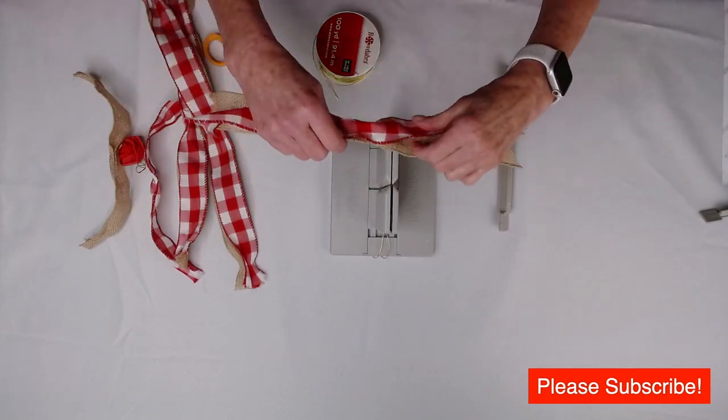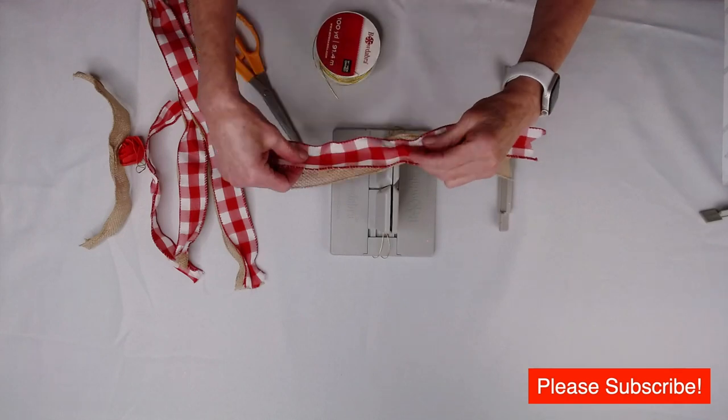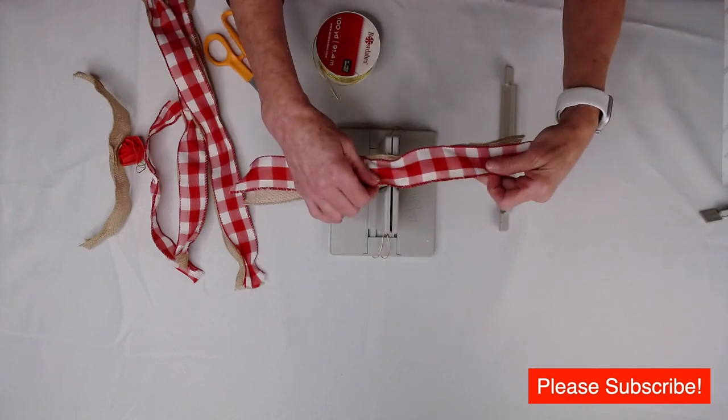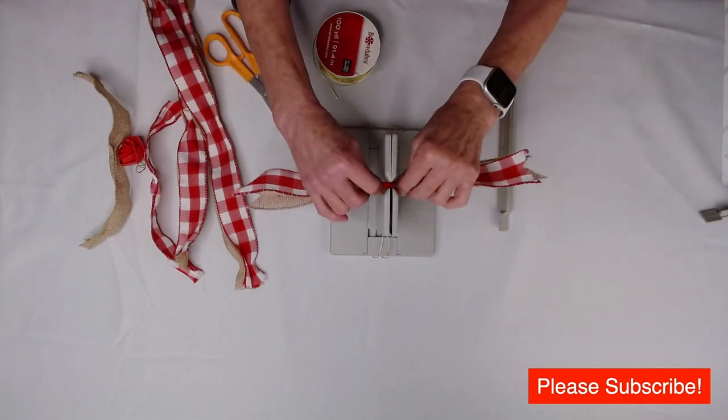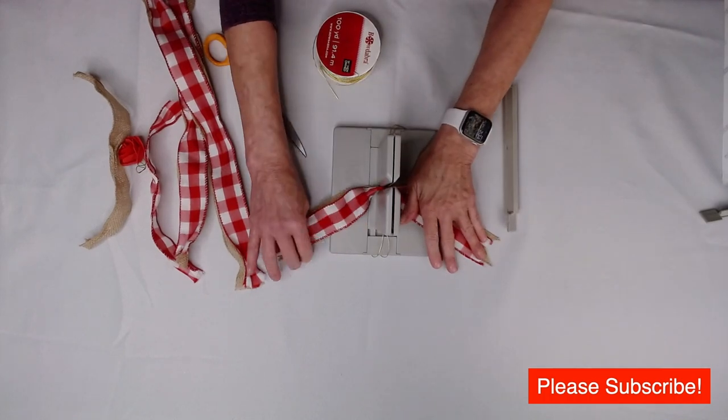Then I'm going to take these two pieces, one is the print and gingham check and the other is the burlap. I'm just going to lay those down. You can see I've already dovetailed the ends.